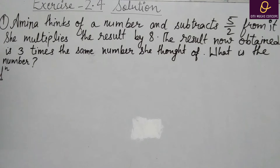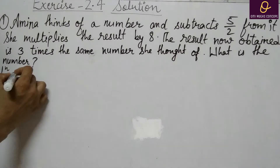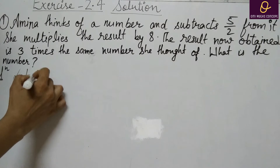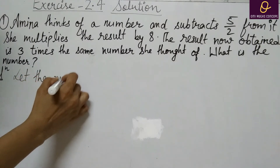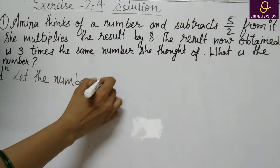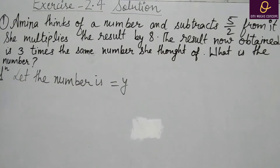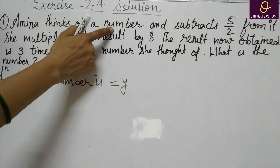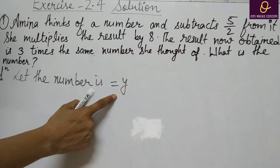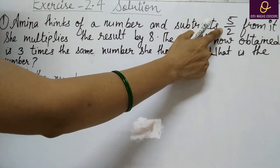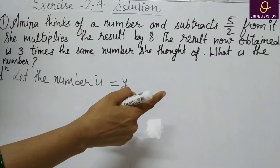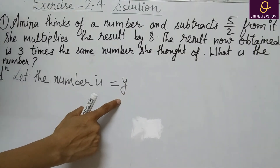आपको बताना है कि number क्या है आपके पास. तो जो number आपको बताना है वो आप let करेंगे. Let the number be y. Amina thinks of a number, तो वो number क्या है आपके पास? y. And subtracts 5 by 2 from it — from y.